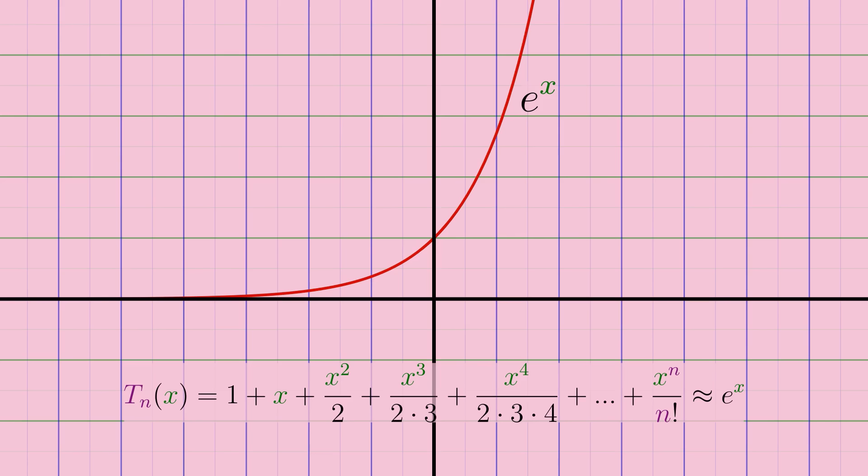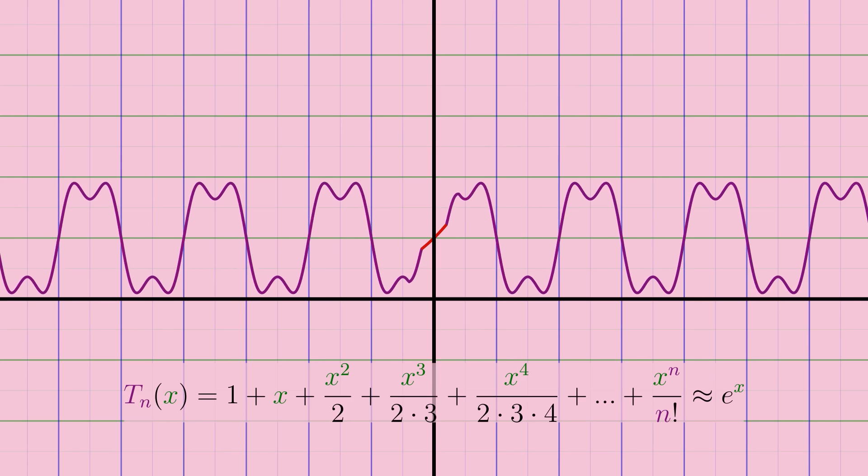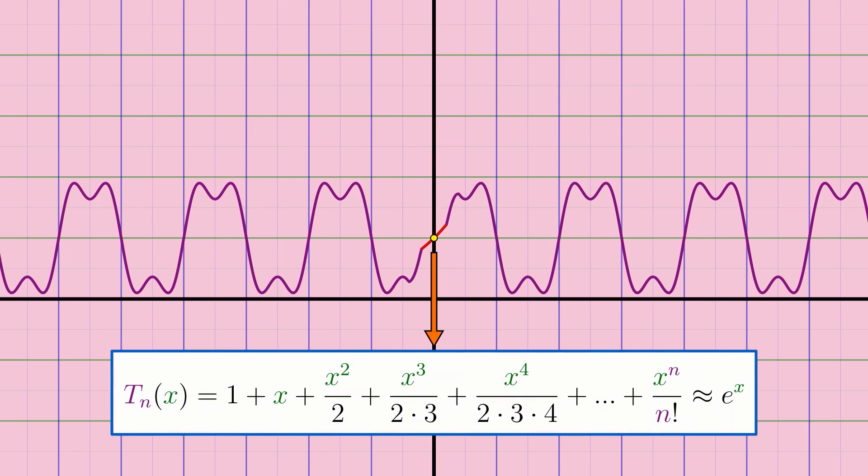If I were to, say, contort the function into oblivion outside of an interval around x equals 0, even a very small interval, the function would still report the same value and derivative information at x equals 0. Meaning the Taylor series would be unchanged, even though I've twisted the function beyond recognition everywhere except for a tiny island surrounding x equals 0.